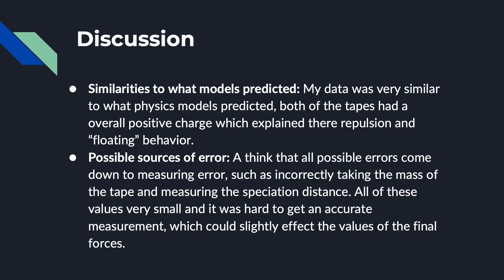For the discussion section, my data was very similar to what the physics models predicted. Both tapes had an overall net positive charge, which explained their repulsion and floating behavior. Some possible sources of error relate to measurement — such as incorrectly taking the mass of the tape or measuring the separation distance wrong. All of these values are very small and difficult to measure accurately, which could have slightly affected the final force values.